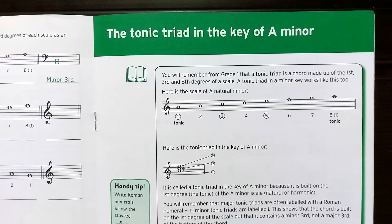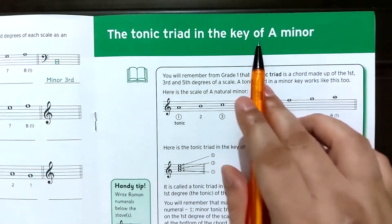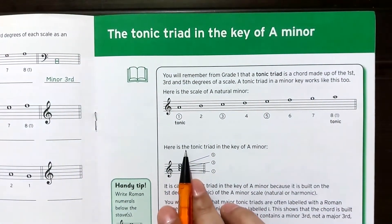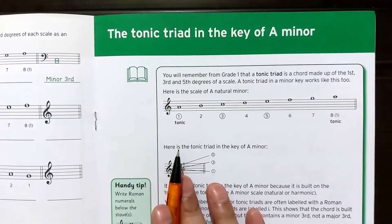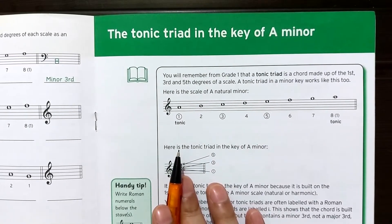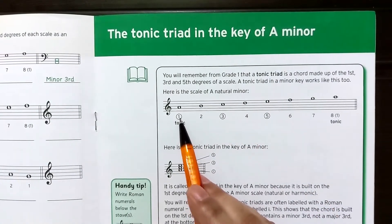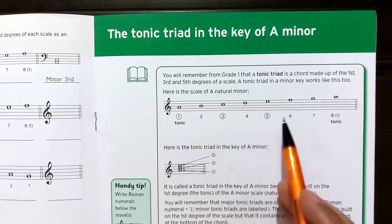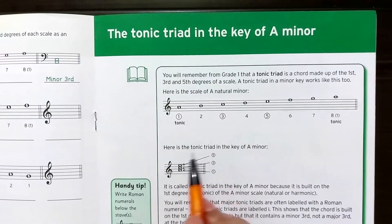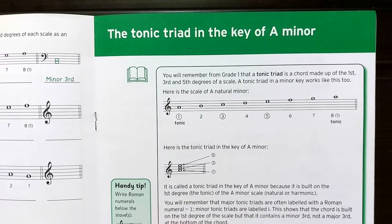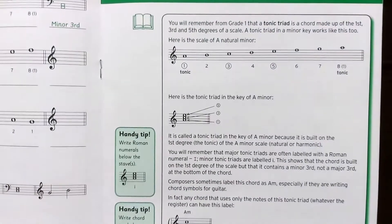Today we have the topic: the tonic triad in the key of A minor. The tonic triad formula is the same in both major and minor keys — we take the first (tonic), third, and fifth degree to make a tonic triad. You can see here in A minor we have first degree A, C, and E. In the major scale also we use only the first, third, and fifth degree.